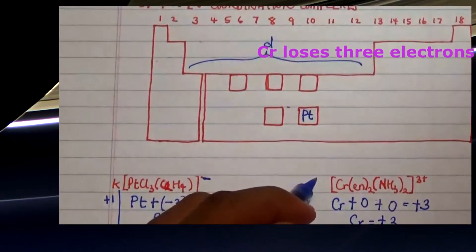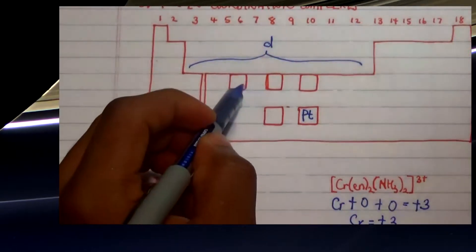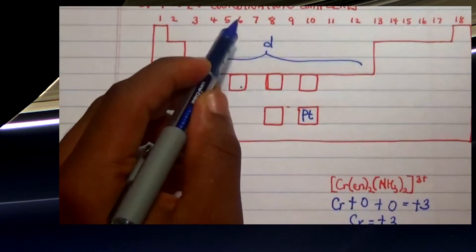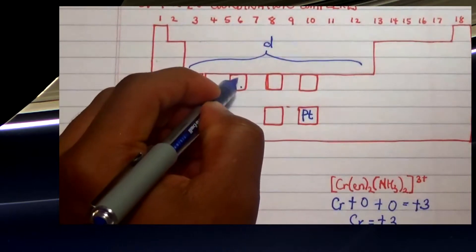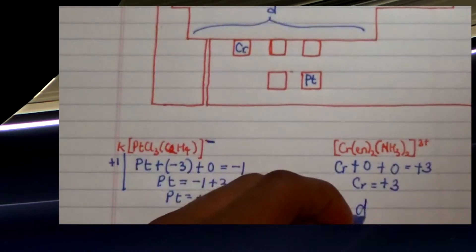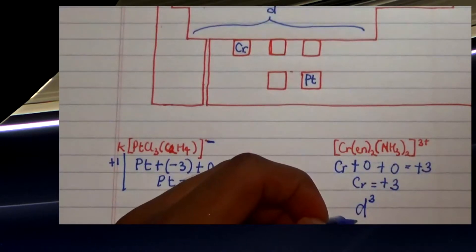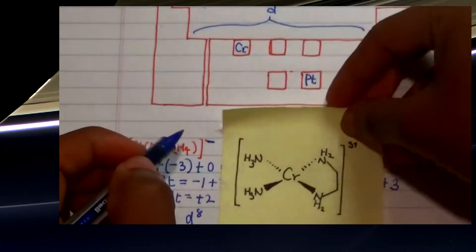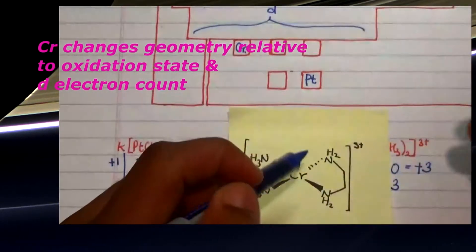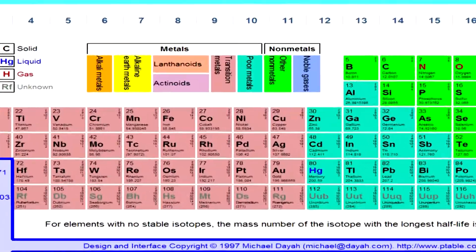Looking at the periodic table, chromium is in group six, so it has six d electrons. Subtracting three electrons lost gives us d3. Most d3 compounds are somewhat flexible, but in general this complex is square planar. That covers this particular example.